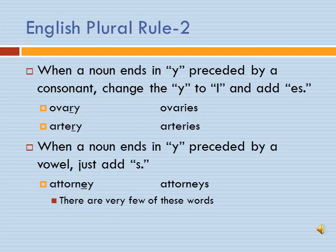Our next English plural rule: when a noun ends in Y preceded by a consonant, change the Y to I and add ES. Ovary is singular; ovaries is plural. Artery is singular; arteries is plural. Even though these are medical terms, they follow English rules. When a noun ends in Y preceded by a vowel, just add an S — attorney becomes attorneys. There are very few of these words.